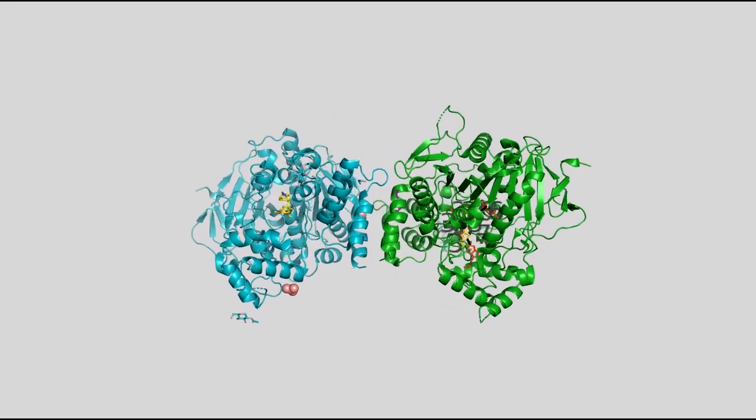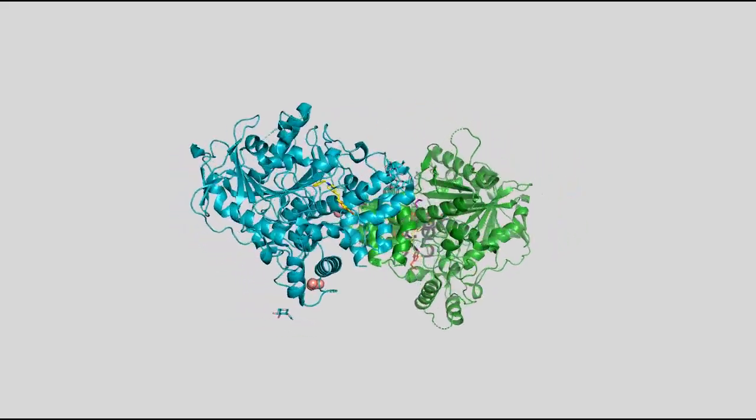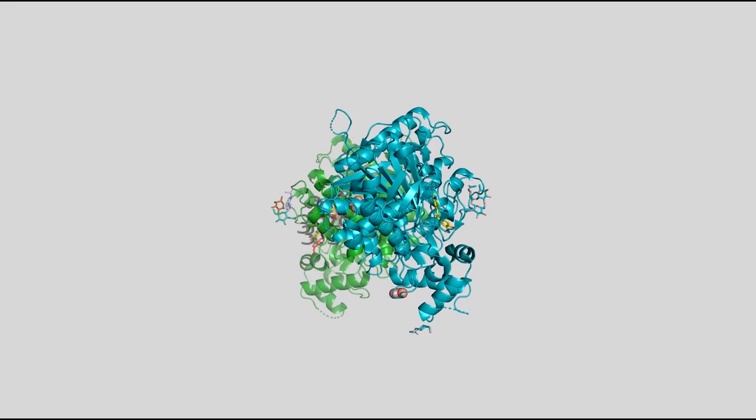The protein structure consists of two chains, A and B, both being in conjunction with a number of ligands.